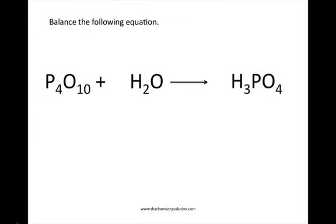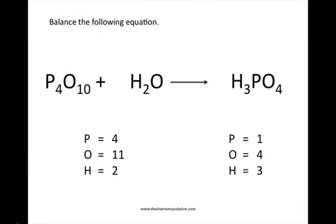Let's take a look at another example. Again, I'll start by taking inventory of each type of atom on the reactant and product sides. On the reactant side, I have four phosphorus atoms, 11 oxygen atoms — 10 from P4O10 and one from H2O, giving a total of 11 — and two hydrogen atoms. On the product side, I have one phosphorus atom, four oxygen atoms, and three hydrogen atoms.